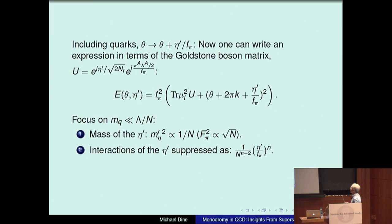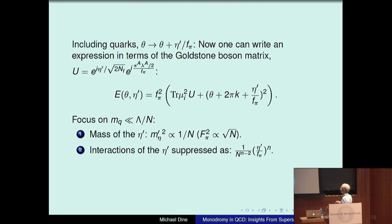Introducing quarks in that picture, I replace theta by theta prime plus eta prime over f_pi in large N. I can write an expression in terms of a Goldstone boson mass matrix where eta prime is also a pseudo-Goldstone boson. Then we can write a potential for theta and eta prime which looks like the usual piece proportional to mass squared and the trace of the Goldstone boson matrix, plus theta plus 2 pi k plus eta prime over f_pi squared. In the limit of small quark masses, the mass of the eta prime goes like 1 over N, because f_pi squared goes like N. The interactions of the eta prime are suppressed as 1 over N to the N minus 2, eta prime over f_pi to the N.